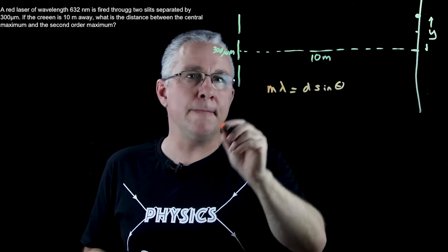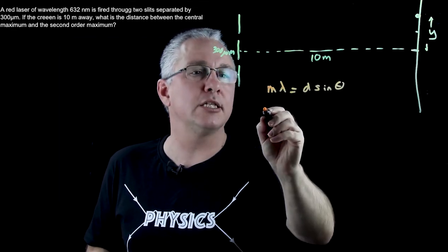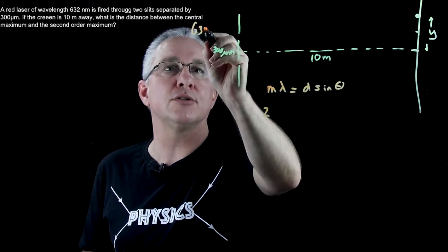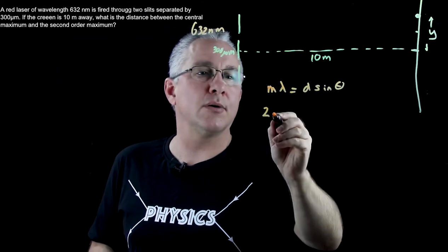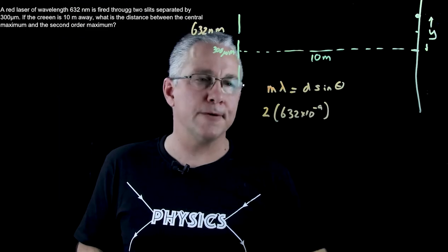Now the m represents the order that we're interested in, the second order, so that's going to be 2. Our lambda, that was also given in the question and that's equal to 632 nanometers, so I'm going to multiply this by 632 by 10 to the power of negative 9.